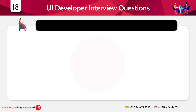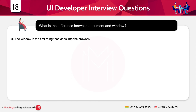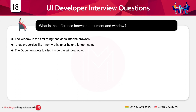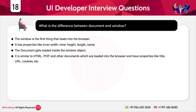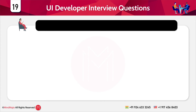The next question is: what is the difference between a document and a window? The window is the first thing that loads into the browser and has properties like innerWidth, innerHeight, length, and name. The document gets loaded inside the window object — it is similar to HTML, PHP, and other documents loaded into the browser — and has properties like title, URL, and cookies.